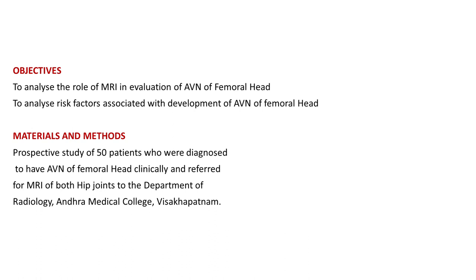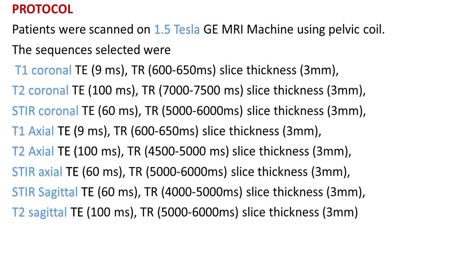Materials and methods: a prospective study of 50 patients who were diagnosed to have AVN of the femoral head clinically and referred for MRI of both hip joints to the Department of Radiology, Andhra Medical College, Visakhapatnam. Patients were scanned on a 1.5 Tesla GE MRI machine using a pelvic coil. The sequences selected were T1-coronal, T2-coronal, STIR-coronal, T1/T2-axial, STIR-axial, STIR-sagittal, and T2-sagittal.